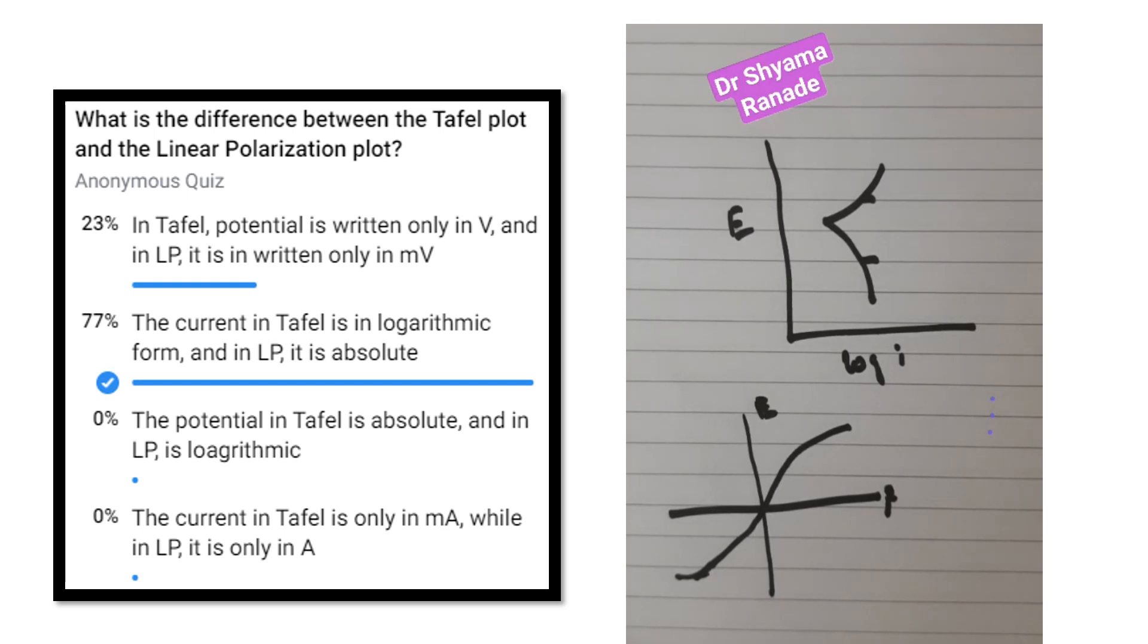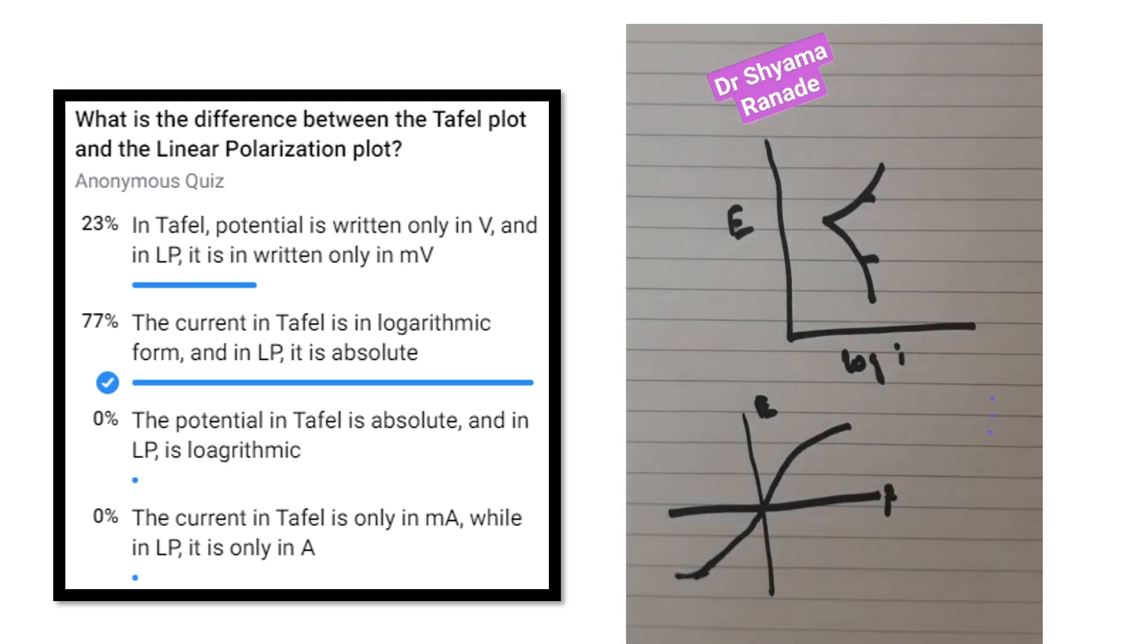If these two techniques depend on change in potential and measurement of the current, and the electrochemical impedance spectroscopy also works with the same principle of change of potential and measurement of the current, what is the main difference between these polarization techniques and electrochemical impedance spectroscopy?